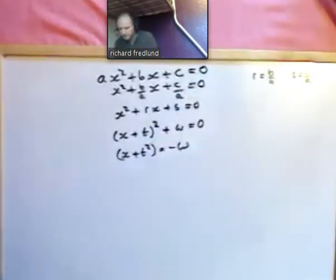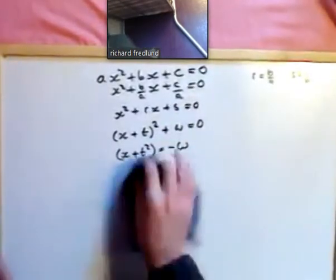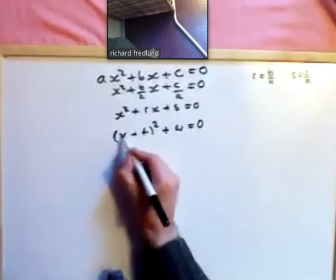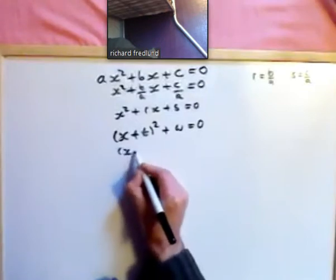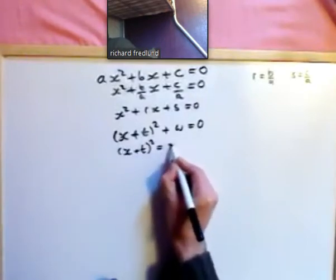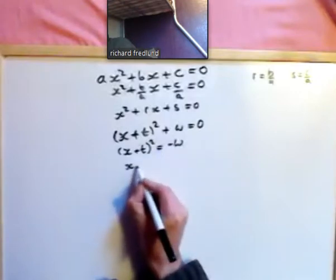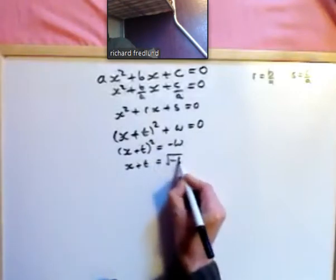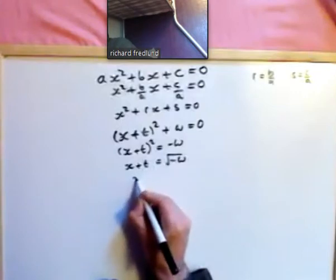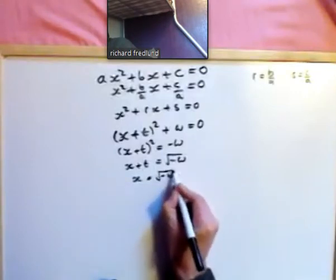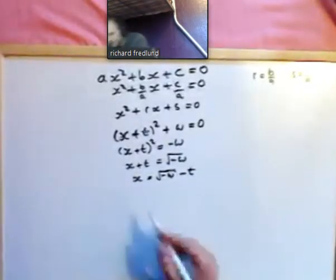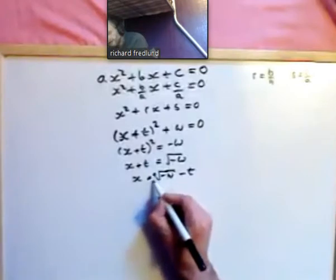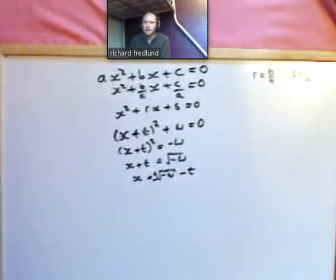We'd have x plus t all squared is equal to minus w. So x plus t would be the square root of minus w, and x would be the square root of minus w minus t. Notice we'd have two solutions because when we take the square root, it becomes plus or minus.